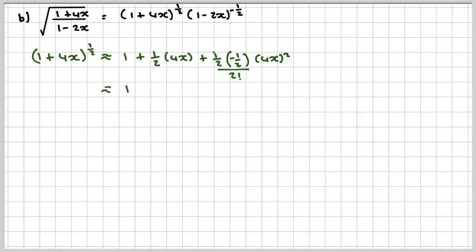So that will be 1 plus 2x minus 2x squared. This will be minus because there's only one minus sign in it. So again, it will be 16 divided by 8 on the denominator, because you get 4 from there and 2 from there.